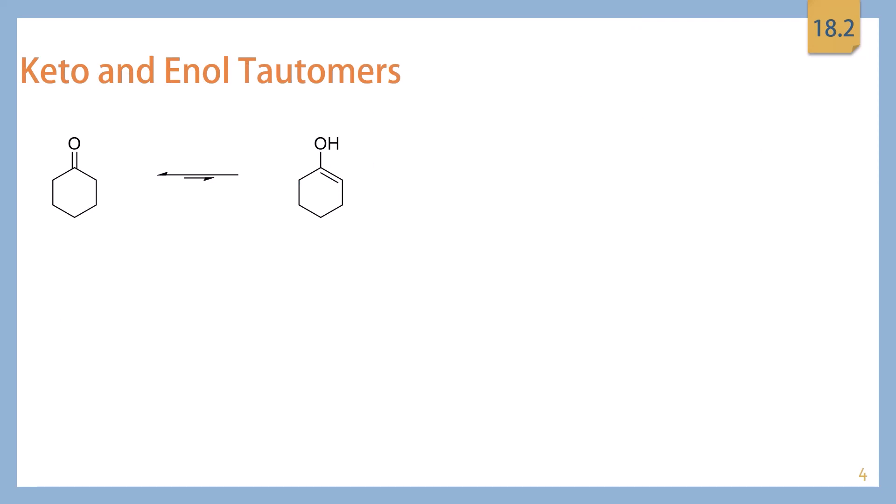So this brings us to the idea of keto and enol tautomers. So tautomer is kind of a new word to us. I think it was kind of thrown around in chapter 17, but not super explained. So ketones or aldehydes in the keto form and enols are easily converted in acid or base. And this process of interconversion is called tautomerization.